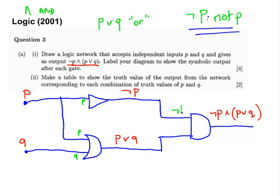And those are the inputs there again. It's not absolutely necessary to put every little detail on your logic network, but again, it does actually say label your diagram to show the symbolic output after each gate. So a well-labeled diagram would help here. Actually, what also would help here is I'm going to write in the names of the gates beside them, just to make it absolutely clear.